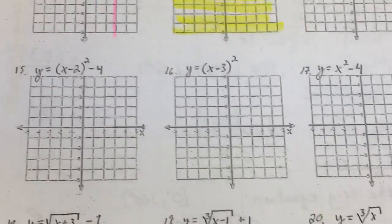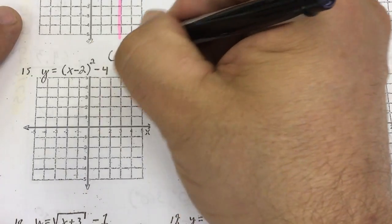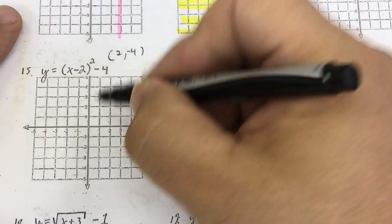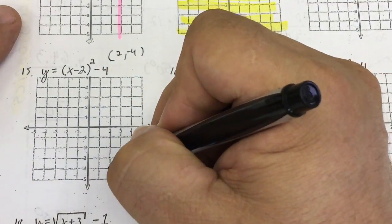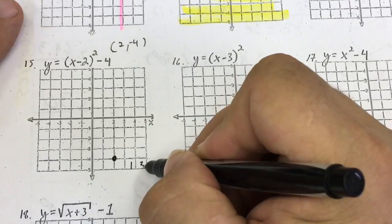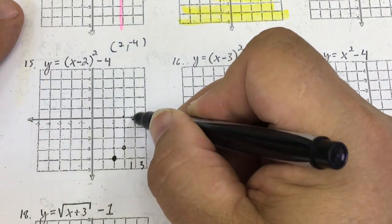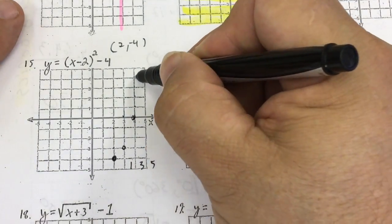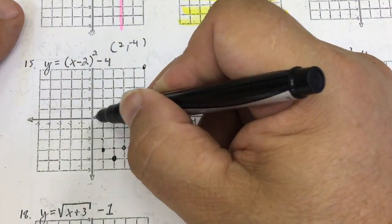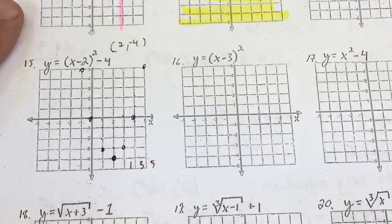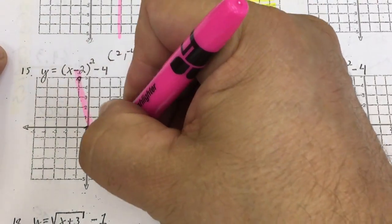It's x squared, so it's parabolic. It has a vertex located at — opposite same — (2, negative 4). I shift right 2 horizontally and shift vertically down 4. I implement the 1, 3, 5 pattern: from the vertex I go up 1 over 1, up 3 over 1, up 5 over 1 — and the same going back left. I connect it with a smooth graph.